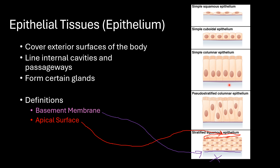Looking at other images, we have our basement membrane and then the apical surface above. Again, basement membrane on this one — below it there are other tissues, and above we have the apical surface where there are no cells that it's in contact with.